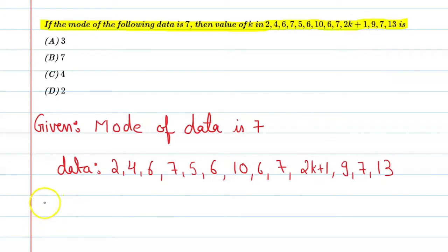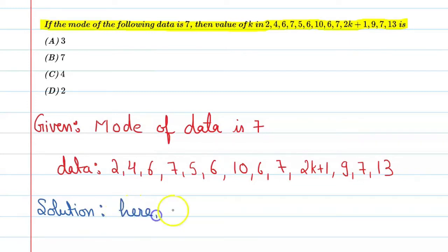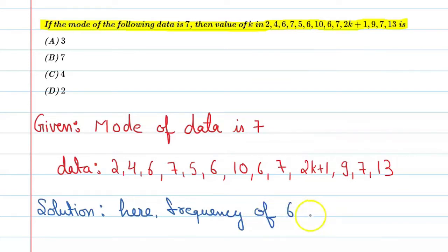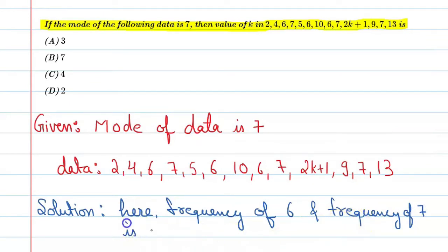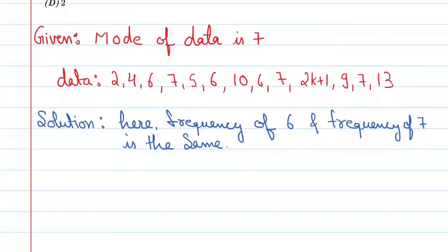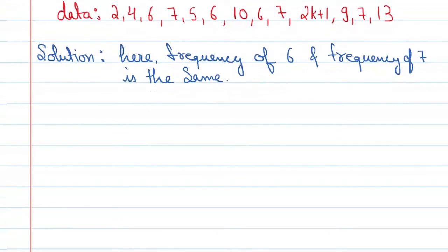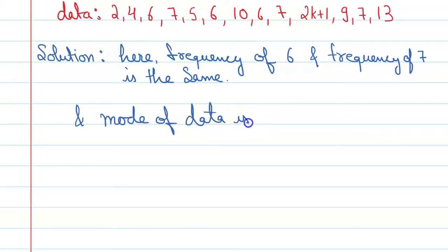Let's start the solution. If you look at this data, the frequency of 6 and the frequency of 7 is the same. Mode is the observation which has the highest frequency, and the mode of this data is given as 7.